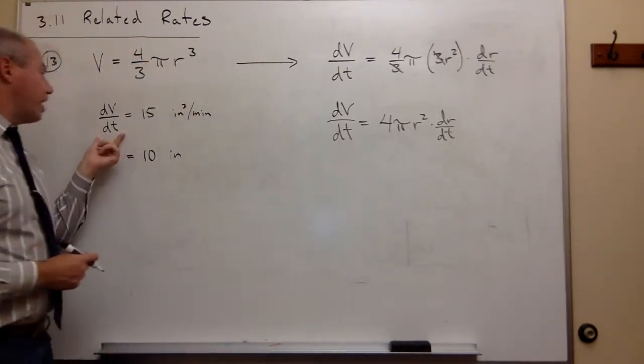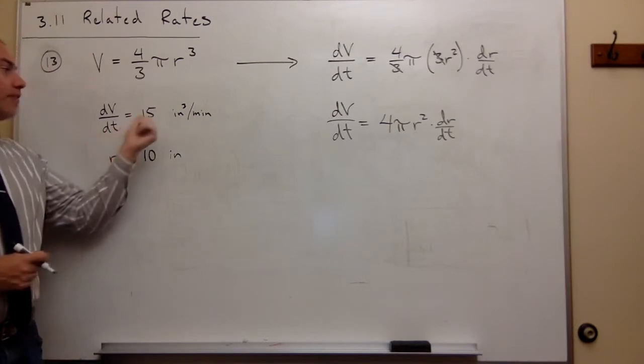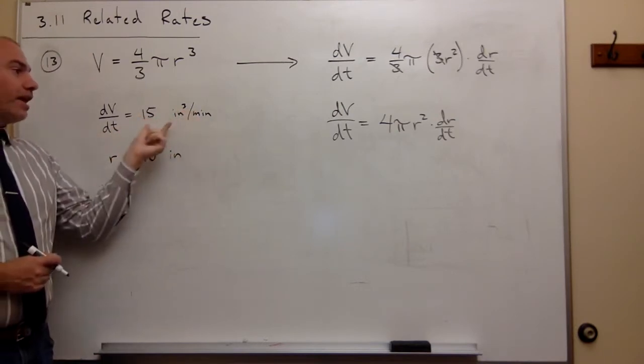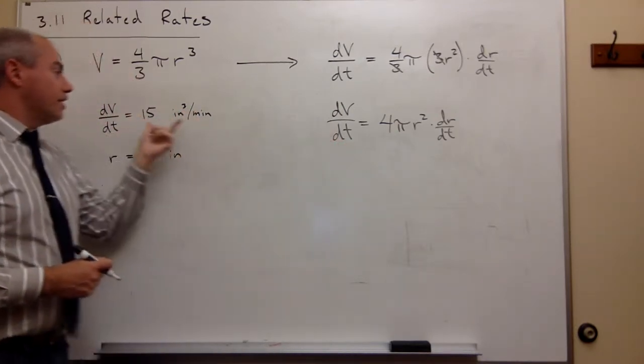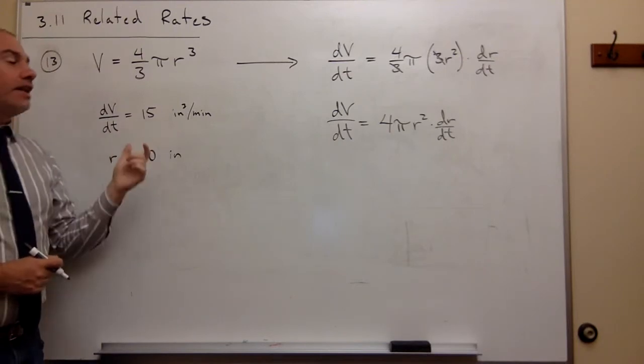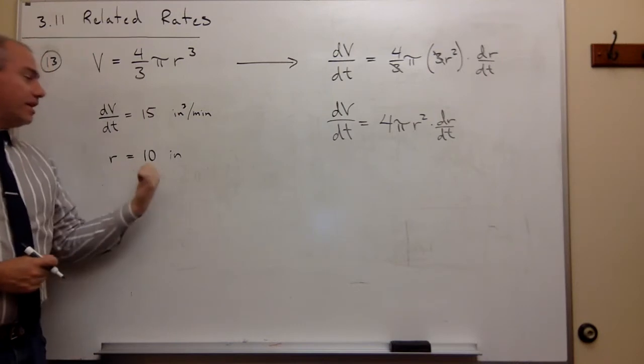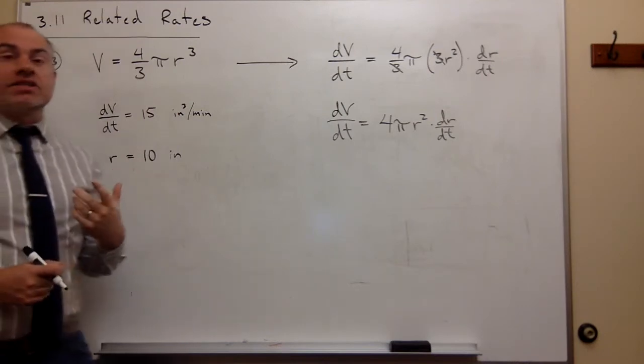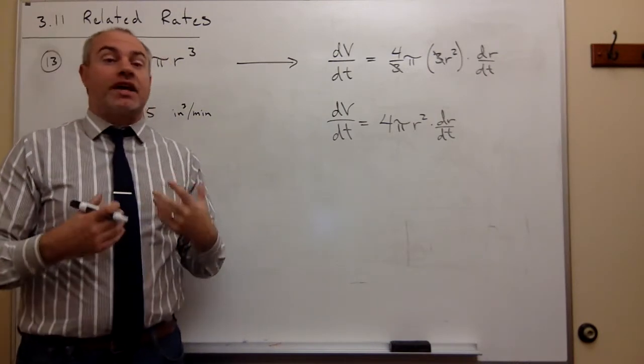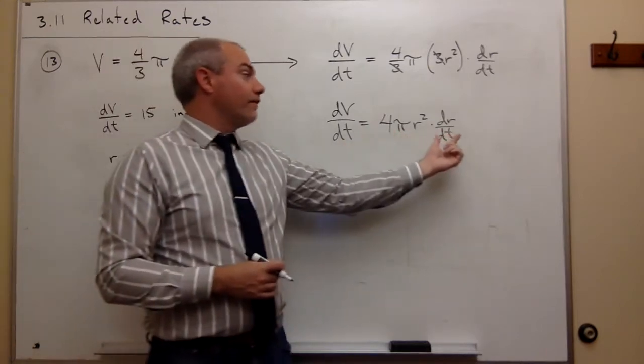In the problem, we're given that the change in the volume over time is 15 inches cubed per minute, so dV/dt is just 15. And in the problem I'm given that r at the time I'm interested in is 10. So now I just need to plug in those two values and I will get a value for dr/dt.